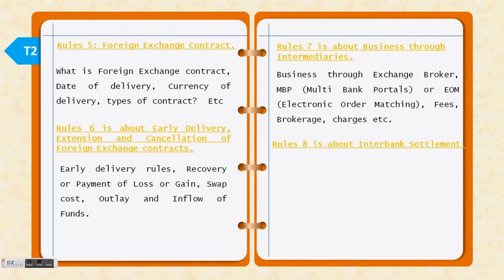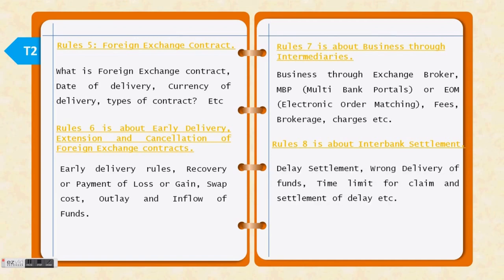Rule number 8 is about interbank settlement — how interbank settlement will work, including wrong delivery of funds, time limits, and what happens if a claim or settlement is not completed. These are the provisions under rule number 8.